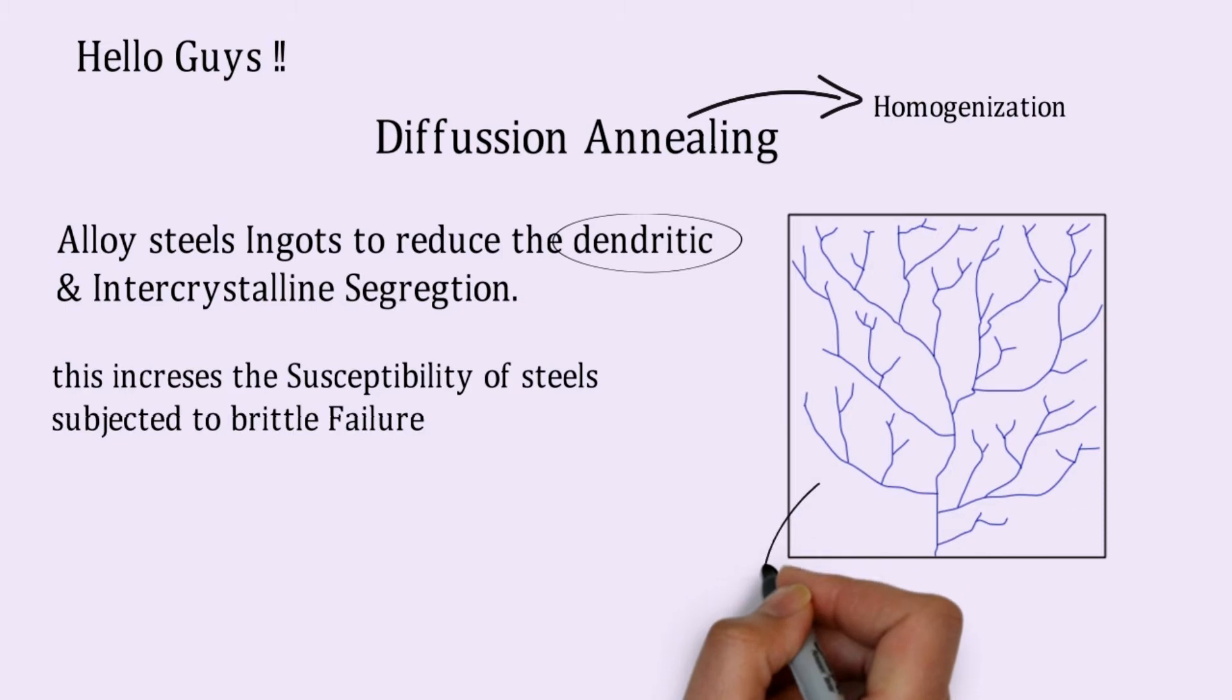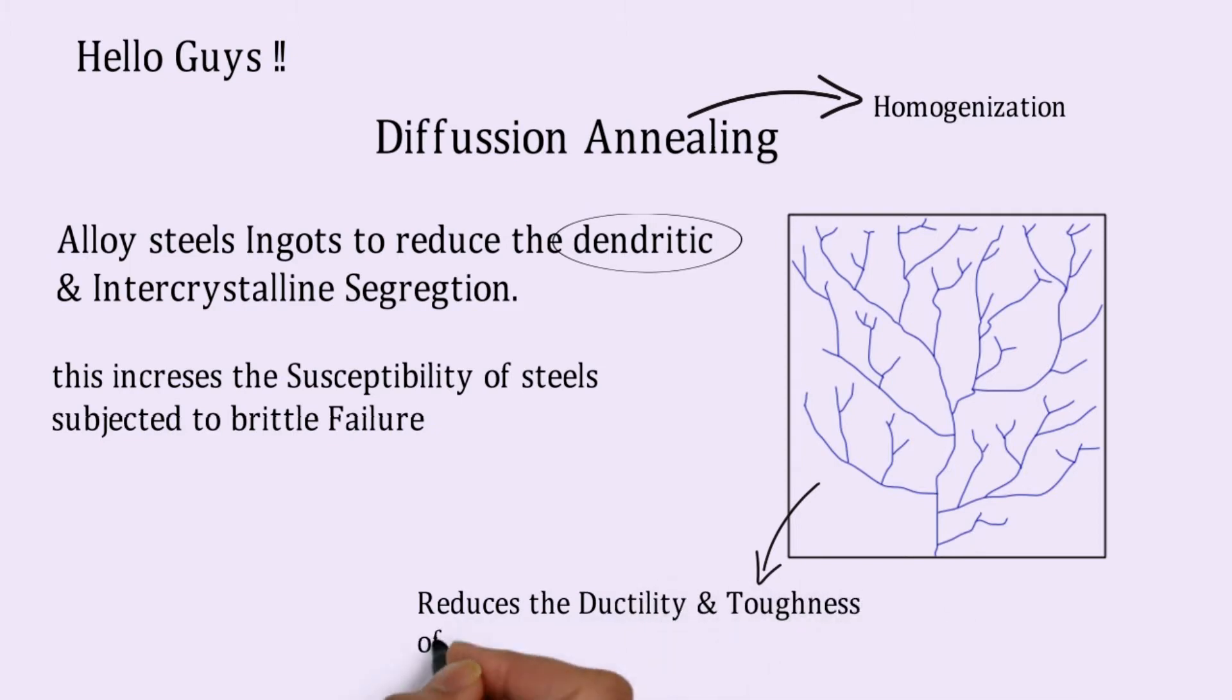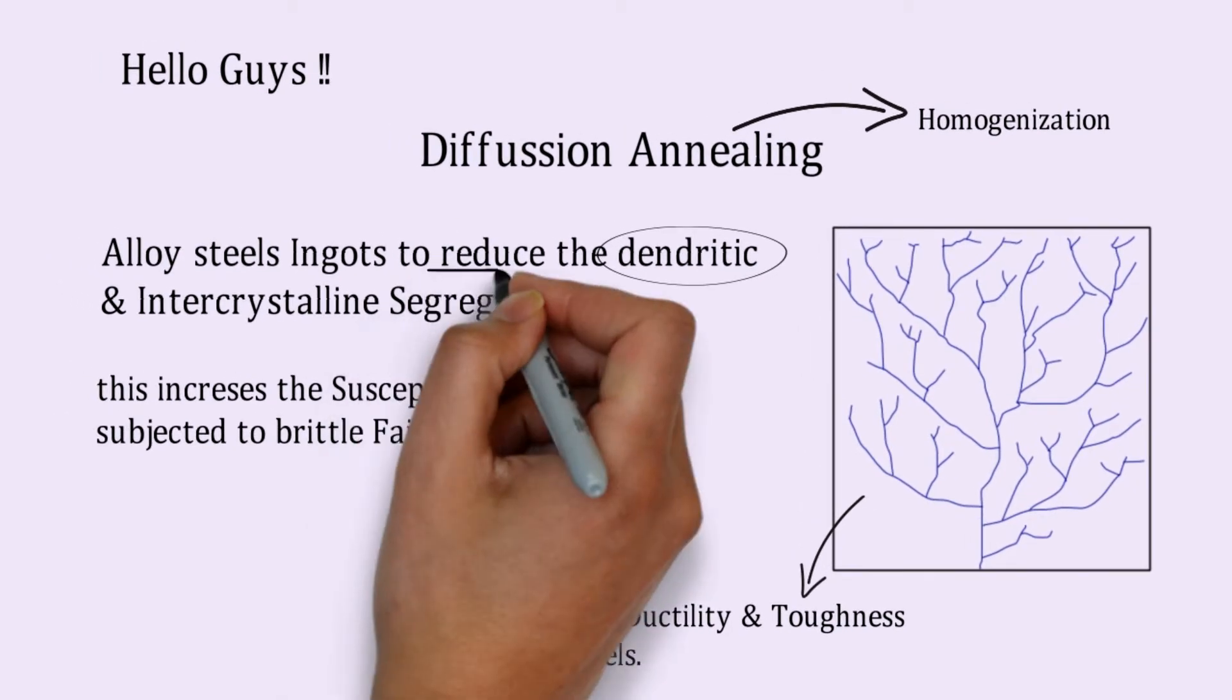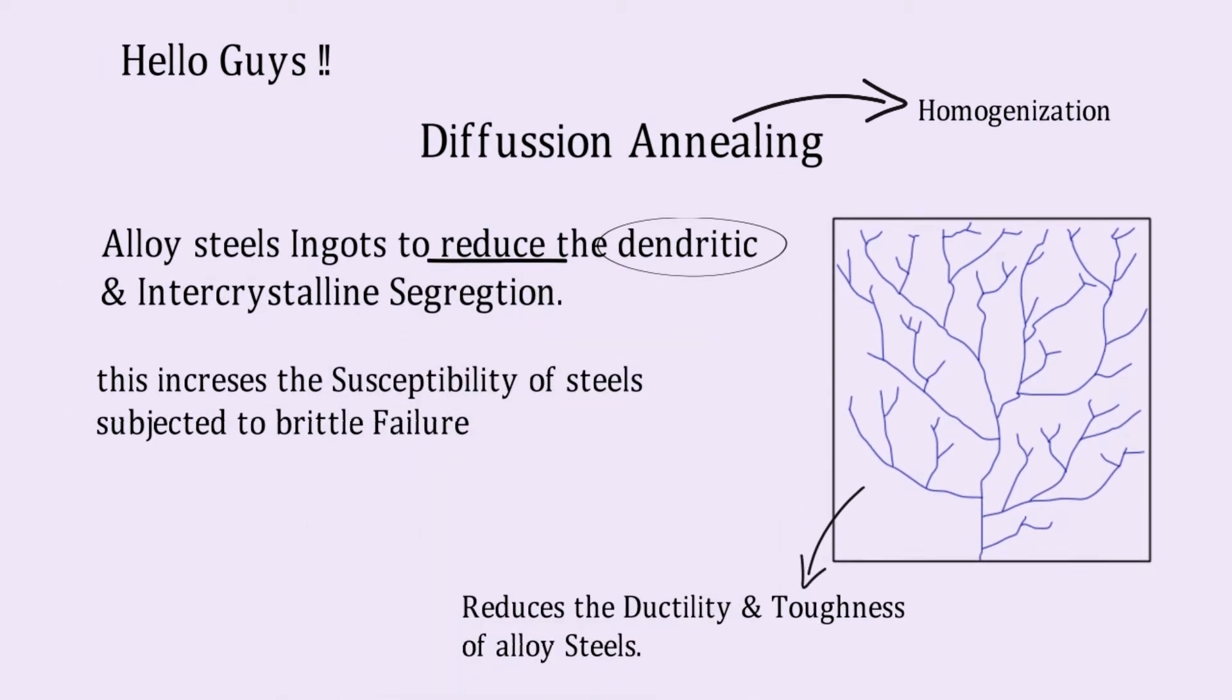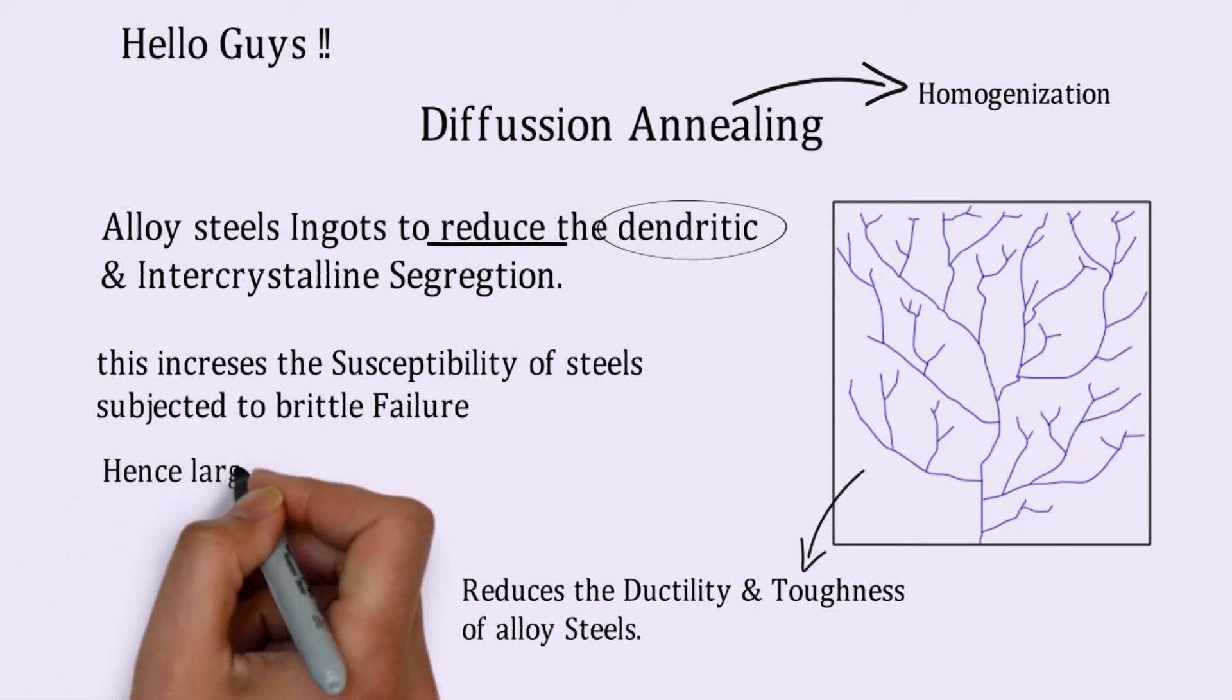This dendritic structure reduces the ductility and toughness of alloy steels. So in order to increase the ductility and toughness, we have to do this diffusion annealing which reduces this particular dendritic structure.